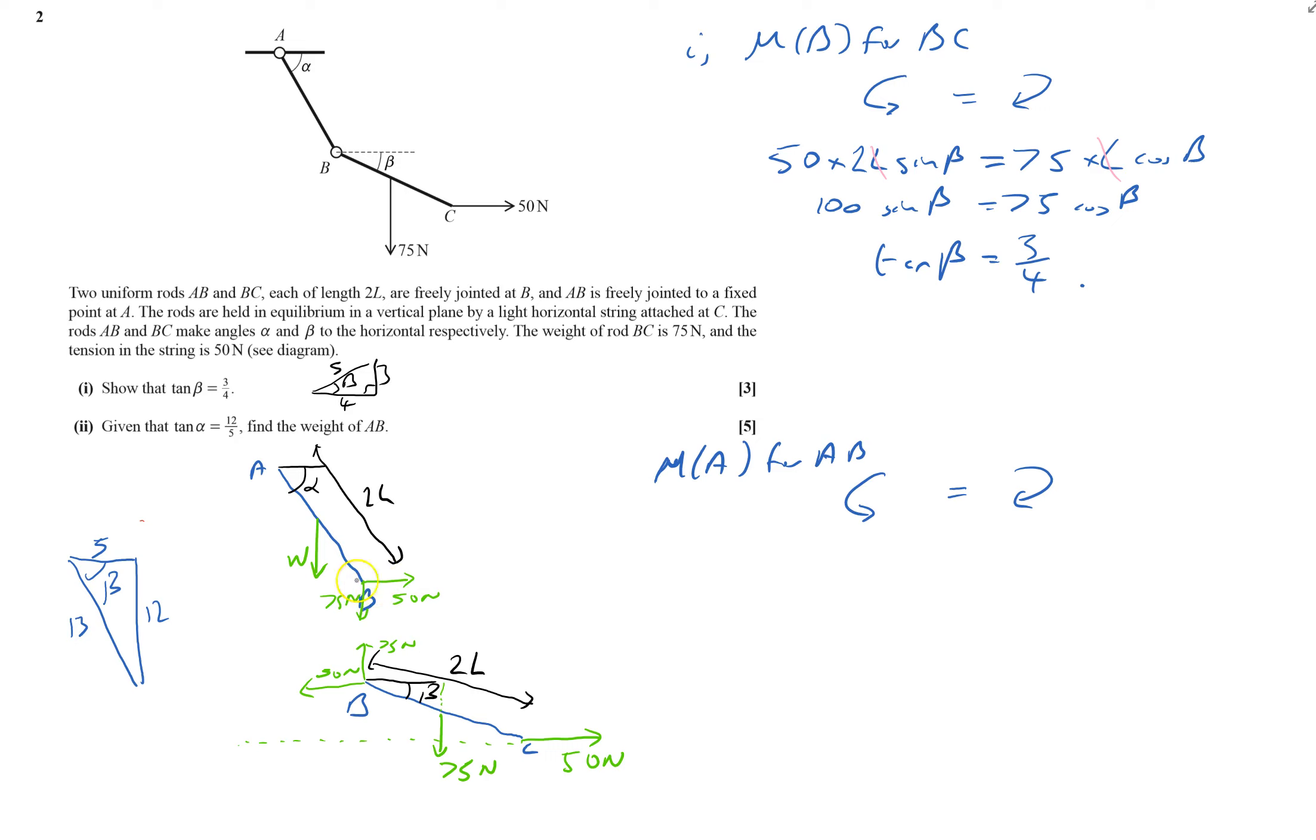I've just got this 50 newtons. So I've got 50 times by, and the distance I want is this distance there. That's my perpendicular distance to the line of action. And that will be the same as this distance up here. Which will be 2L sine alpha. So times by 2L sine alpha.